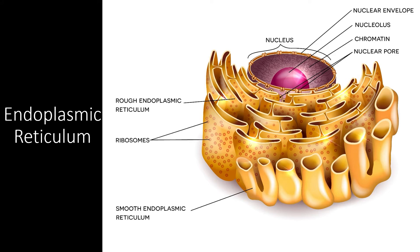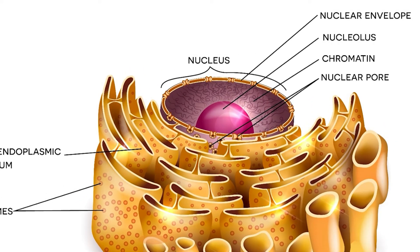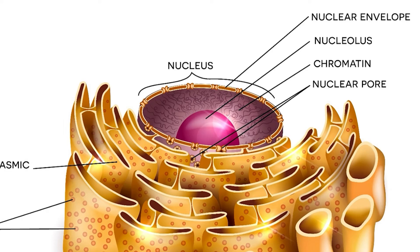Now let's take a look at an organelle found in all eukaryotic organisms: the endoplasmic reticulum, sometimes just ER for short. The endoplasmic reticulum is a series of folded membranes that connect directly to the nuclear membrane, sort of like an extension of the nucleus itself. There are two types of endoplasmic reticulum found in eukaryotes, the rough ER and the smooth ER, which have slightly different functions.